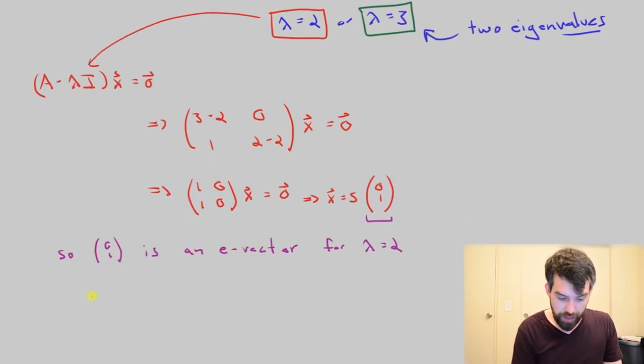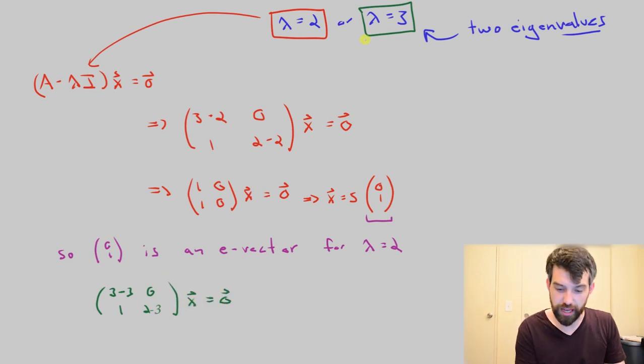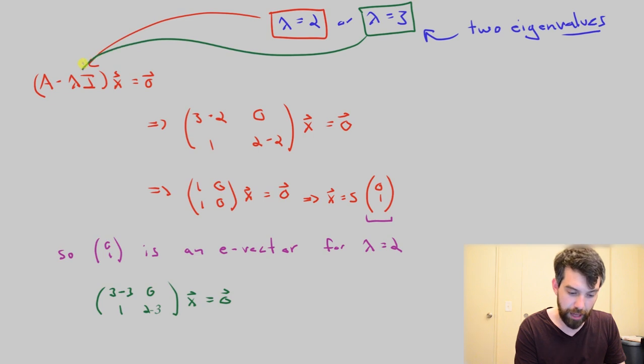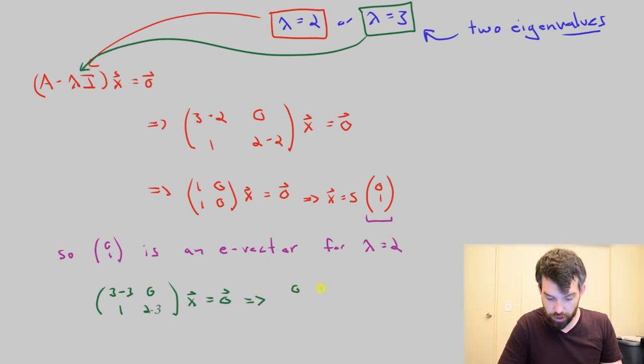Alright, so if I'm going to do this I'm going to have the equation 3 minus 3, 0, 1, 2 minus 1, all of that times x is equal to 0. So that was just taking lambda equal to 3 and plugging it into our formula. In other words, I'm going to have 0, 0, 1, minus 1 times the vector x is equal to the 0 vector.